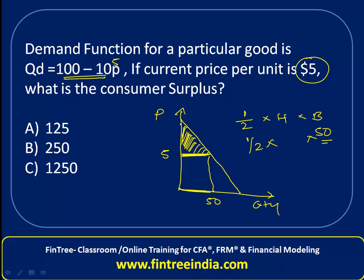The height would be the vertical distance between the y-intercept and the current price of $5. This intercept point is the price when quantity demanded is 0. Setting quantity demanded equal to 0 gives 10P = 100, therefore price equals 10. So the y-axis intercept is 10.